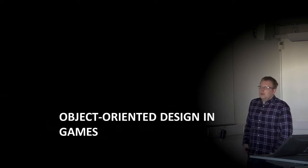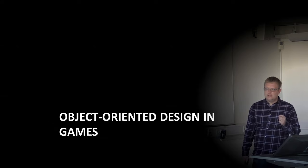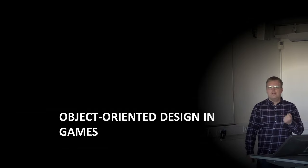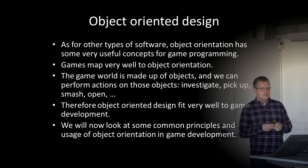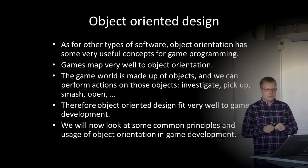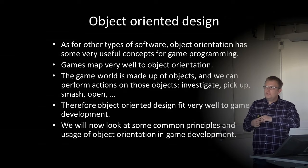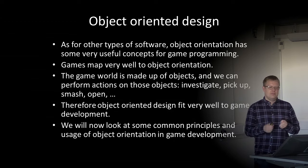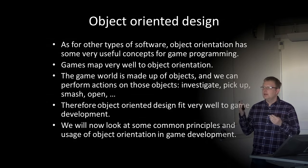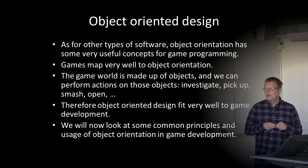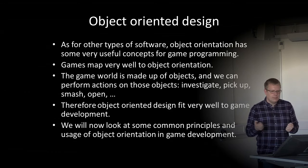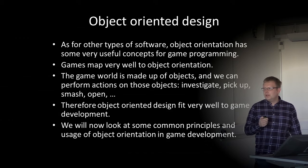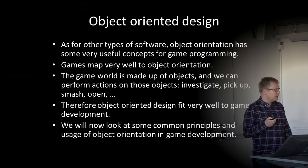The next part is object orientation in games. You should be fairly familiar with many of the concepts we discuss here. Object orientation has some very useful concepts for game programming, and it turns out that games map very well to object orientation. A game world is typically made up of a lot of objects that we can perform actions on — investigate them, pick something up, smash something, open something — and they have properties that define size, texture, etc. Object-oriented design fits very well to game development.